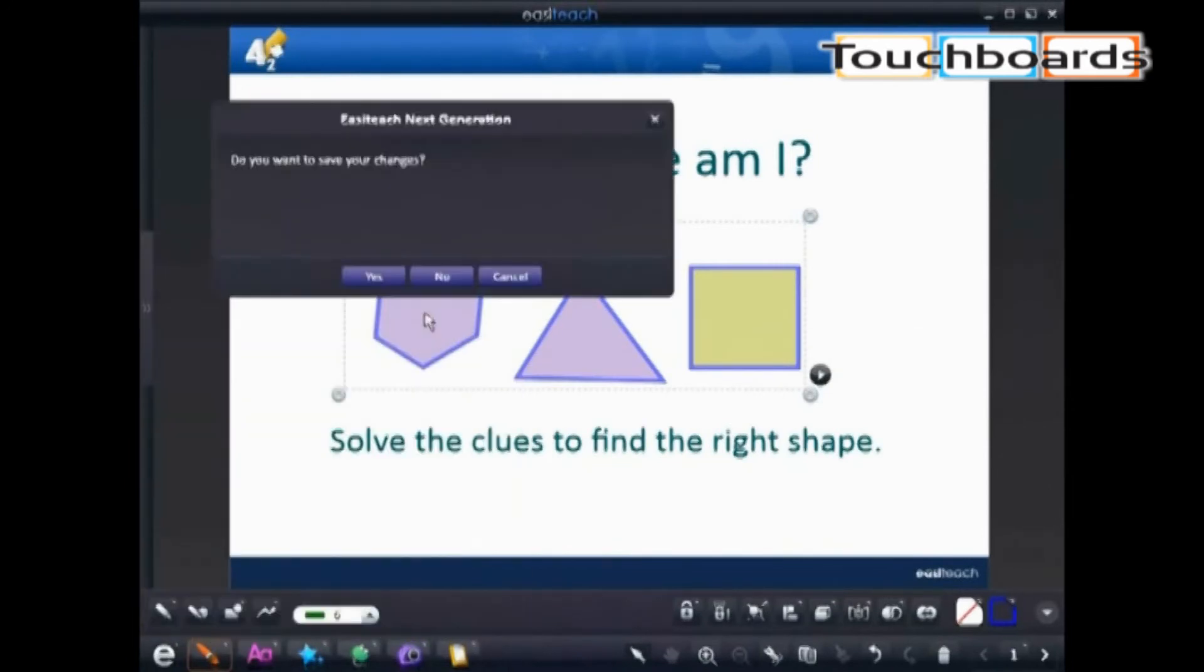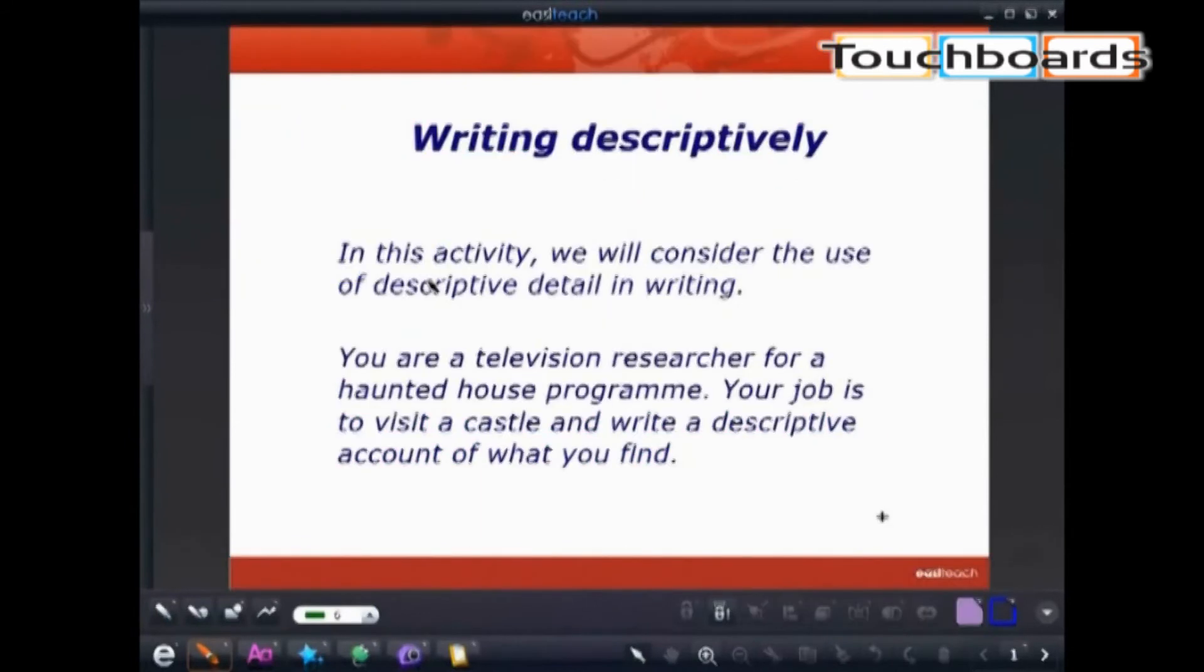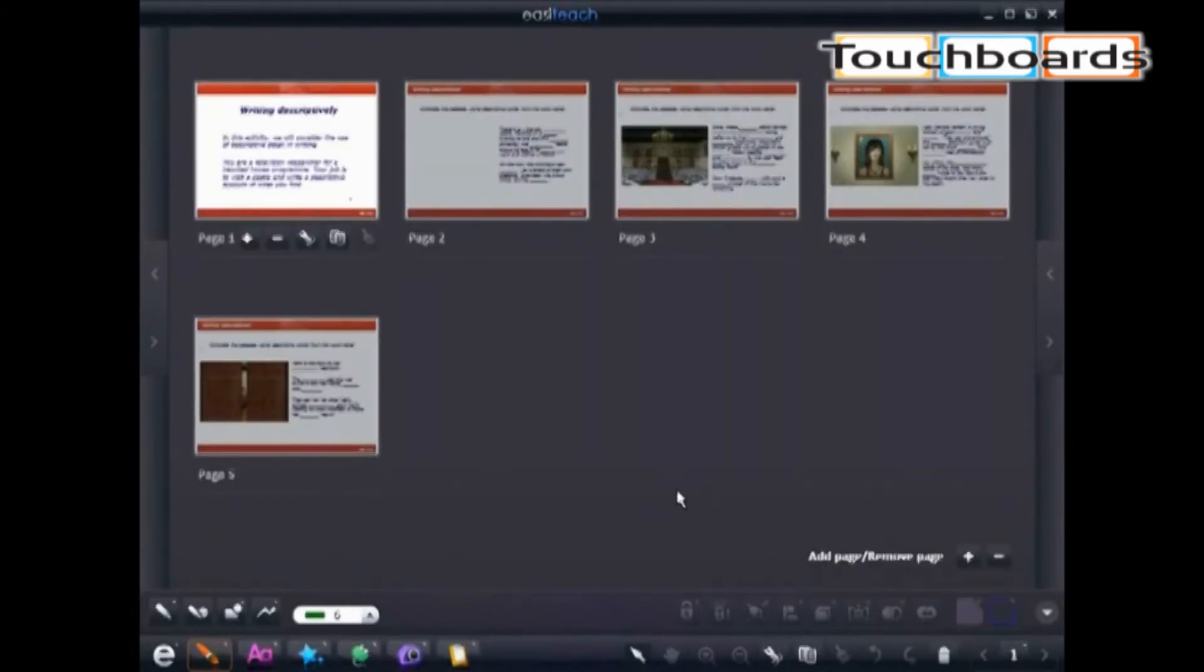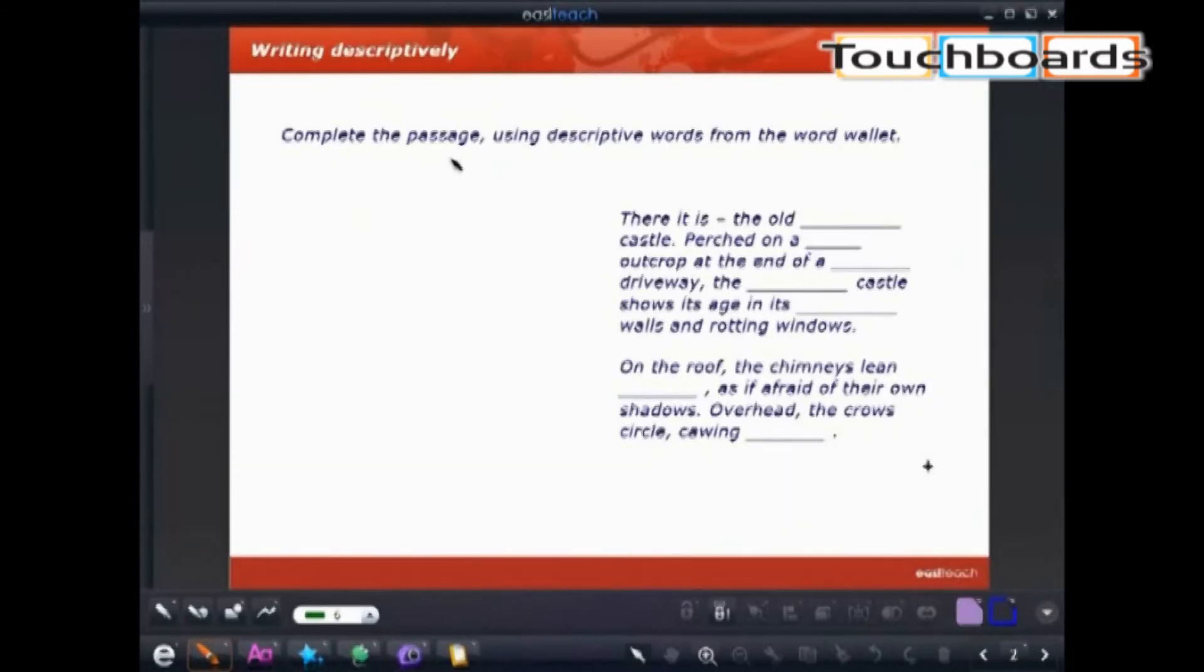Going to the e-menu, we can quickly move on to an English lesson. It will ask us to save. We can decide to save or not. And then we can move into our descriptive writing activity where we can go to storyboard mode and view all the pages in our file, quickly selecting one to jump to page two.